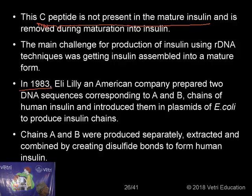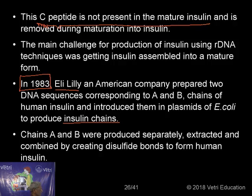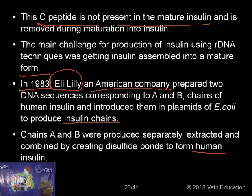In 1983, the problem was solved by Eli Lilly, an American company. They prepared two DNA sequences corresponding to the A and B chains of human insulin and introduced them in plasmids to produce insulin chains. Chain A and Chain B were produced separately, extracted, and combined by creating disulfide bonds to form human insulin. Finally, we got human insulin produced biotechnologically, and today we are able to get insulin that is biotechnologically produced.